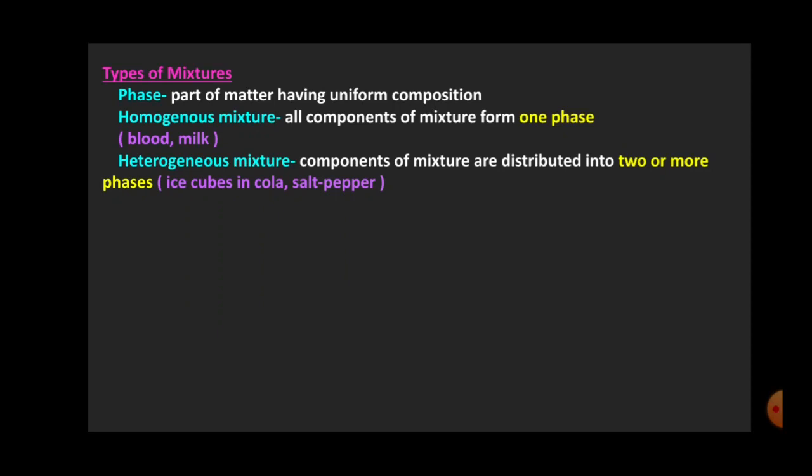There are two types of mixtures: homogeneous mixture and heterogeneous mixture. Before that we have to learn one more new word — phase. Phase is the part of matter having uniform composition. A mixture can have one single phase or more than one phase. In simple words, these are the parts of the mixture.